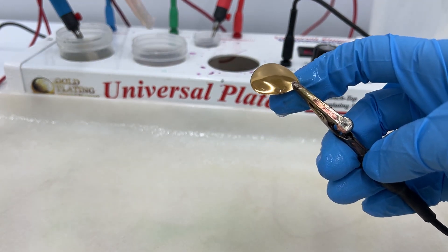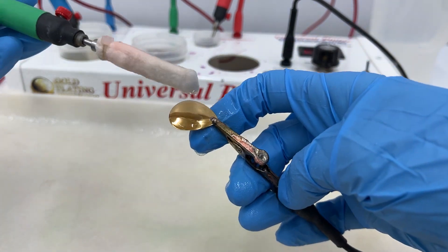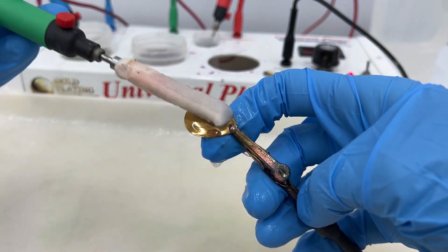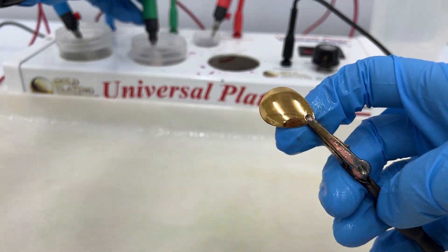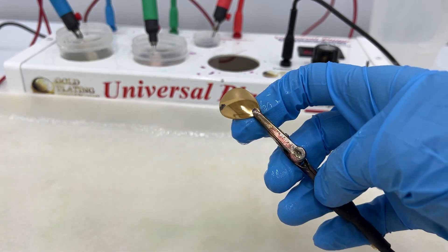Now the surface activator at the same voltage. Spray it off.